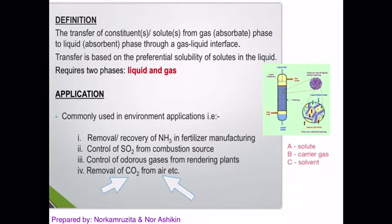Looking at the fourth application, the removal of carbon dioxide from air. CO2 here is called the solute, and we represent CO2 gas as our solute that we're going to separate. We use air as the carrier for this gas. The air is called the carrier gas, and the symbol we use is B.